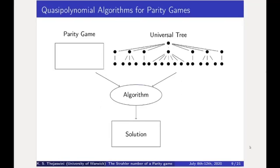Solving parity games is known to be in the complexity class NP-intersection co-NP, but there are still no known polynomial time algorithms for it. Until 2017, we only had exponential time algorithms. However, there is a breakthrough result in 2017 by Calude, Jain, Khoussainov, Li, and Stephan, which produced a quasi-polynomial time algorithm. After this, several quasi-polynomial time algorithms were also published, and even though they looked very different at first glance, they fit in the following pattern — they take a parity game, use something called a universal tree, and produce a solution.